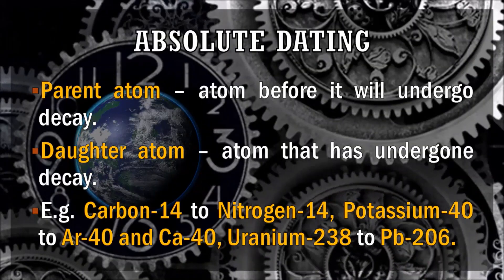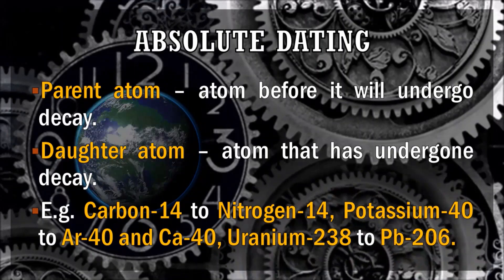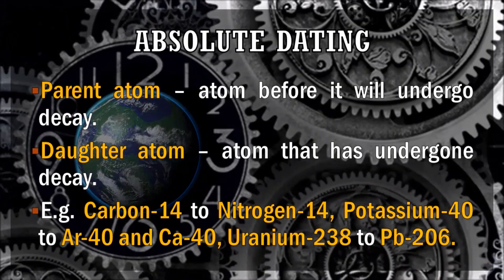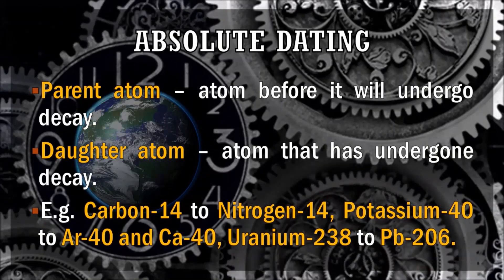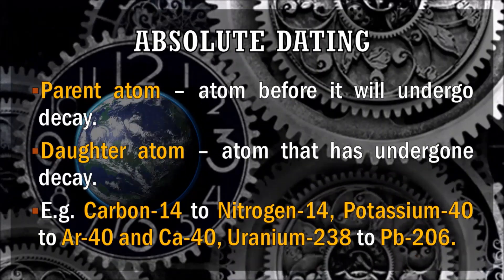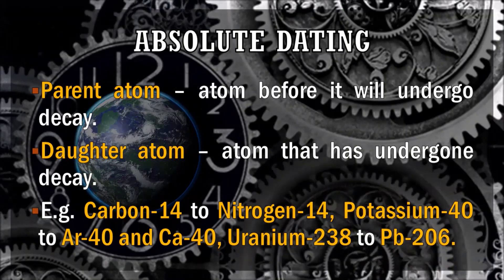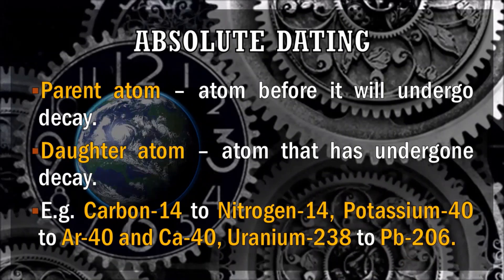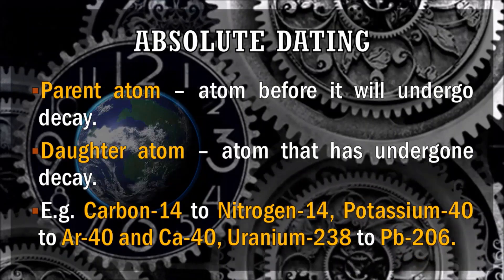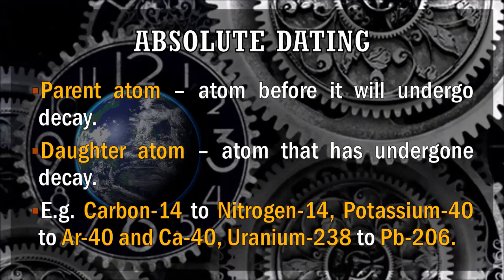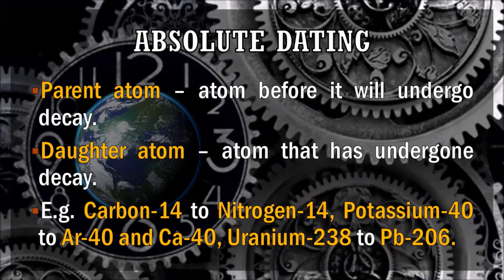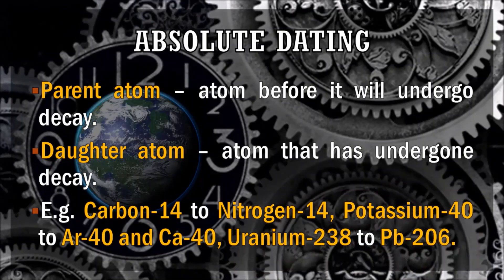There are two types of atoms in radioactive decay: the parent and the daughter atom. The parent atom is an atom before it undergoes decay, while the daughter atom is the atom that has undergone decay. For example, carbon-14 is the parent atom and nitrogen-14 is the daughter atom. Another example is potassium-40 decaying to argon-40 and calcium-40, where potassium-40 is the parent atom. And uranium-238 is the parent atom, while lead-206 is the daughter atom.